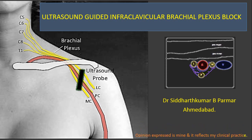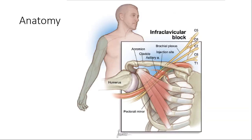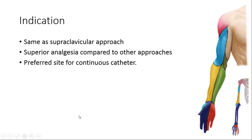This talk covers ultrasound-guided infraclavicular brachial plexus block, a cord-level block where lateral, medial, and posterior cords are targeted. Key landmark structures include the coracoid process and clavicle. Sorter et al. performed an MRI study on volunteers and found that the medial cord lies at three to six o'clock, the posterior cord at six to nine o'clock, and the lateral cord at nine to twelve o'clock, in relation to the second part of the axillary artery.